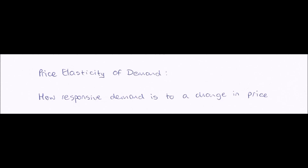Hello everybody and welcome to this microeconomics video on price elasticity of demand and price elasticity of supply. Firstly, price elasticity of demand. Price elasticity of demand, or PED as we sometimes refer to it, is defined as how responsive demand is to a change in price — that is, how much demand will change when there is a change in price, specifically how much the demand of a good will change when the price of that good changes.